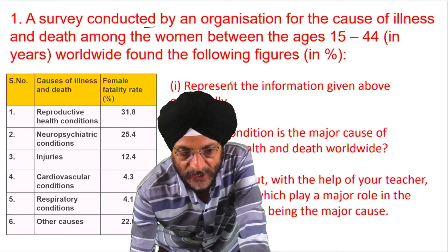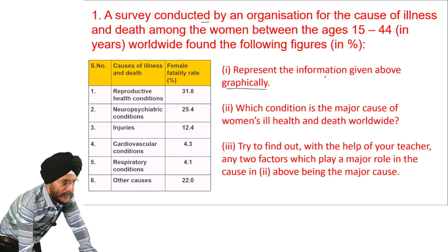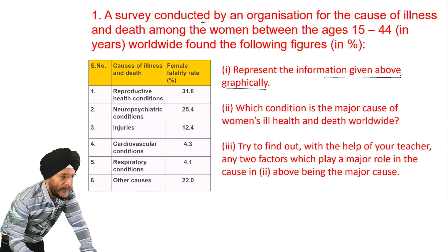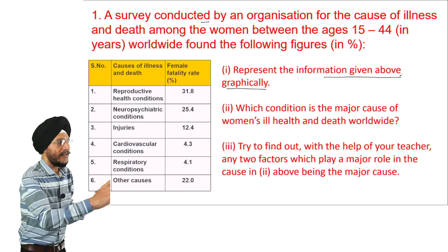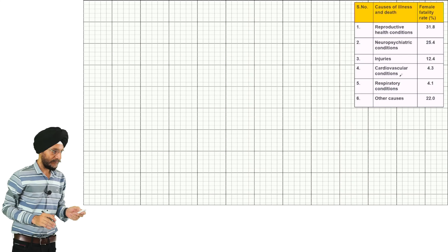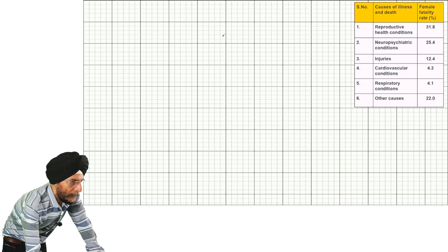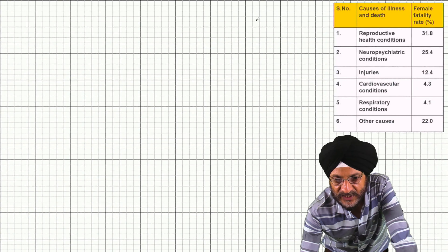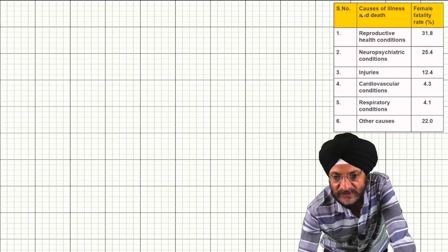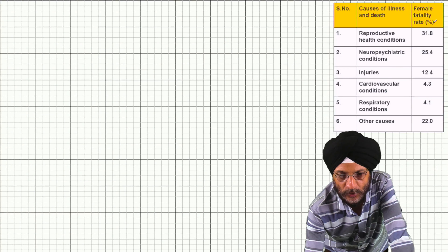We have to represent the information given above graphically — that is, by way of a graph. This is the chart and these are the figures which have been taken from the question, and we will now prepare the information in the form of a graph.